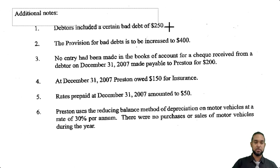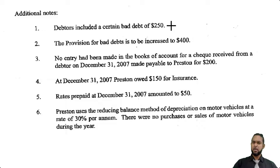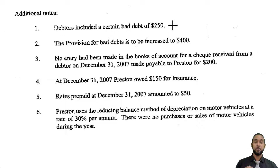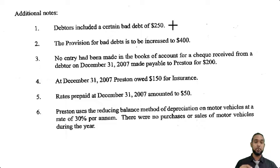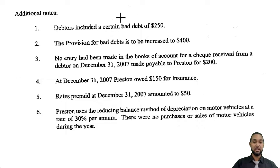Now we have some additional notes. First one: debtors included a certain bad debt of $250. A bad debt is a debt we can no longer reasonably expect to collect, so we're going to have to write it off. That $250 amount is going to have to be subtracted or removed from the debtors figure. And don't forget, bad debts is an expense, so that's going to go in the income statement.